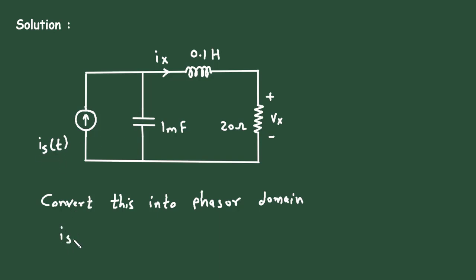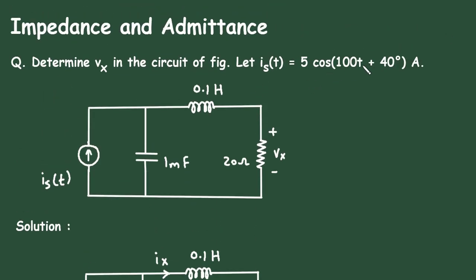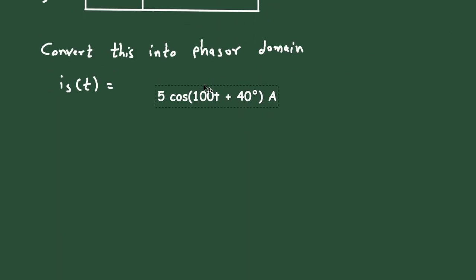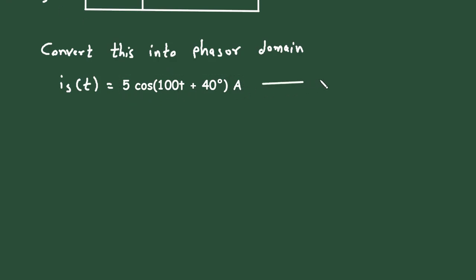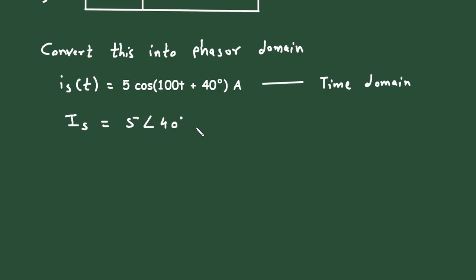This Is(t) in phasor domain will be: Is(t) = 5cos(100t + 40°) ampere, which converts to capital Is = 5∠40° ampere in phasor domain.